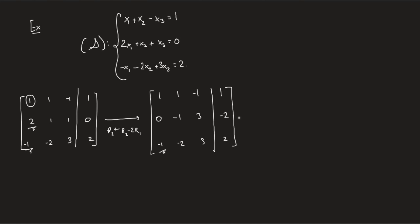Then you continue to do the same thing for row three. Try to null this guy out. So for that we need to do R3. We replace it by R3 minus times minus R1. That is R3 plus R1. So we get first two rows are the same. So minus one plus one is zero, minus two plus one is minus one. Three minus one is two. And two plus one is three.